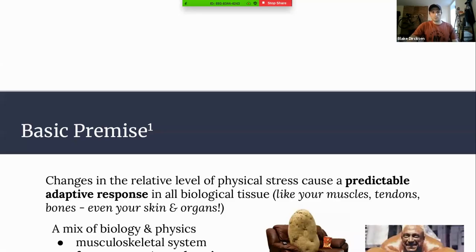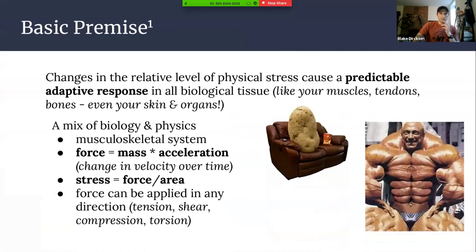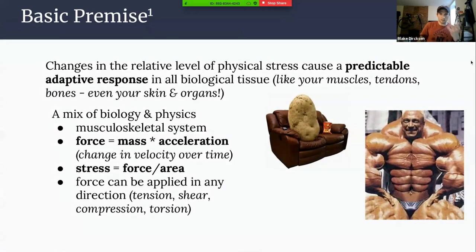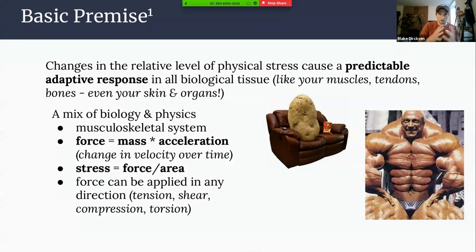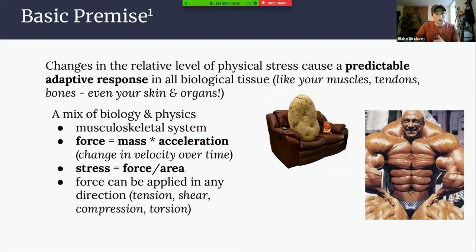The basic premise of physical stress theory is that changes in the relative level of physical stress cause a predictable adaptive response in every biological tissue — things like your muscles, tendons, ligaments, bones, even things like your integument and cardiovascular system. These are sort of fundamental physics equations. Then we can start to apply that to the runner in front of us, and things will just start to make a bit more sense about why this injury occurred in the first place, or how to best navigate it.